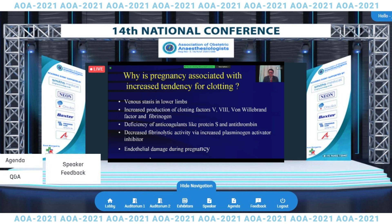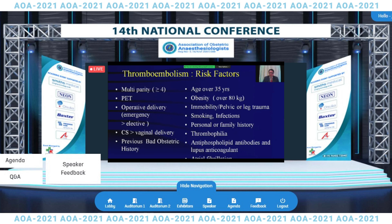Why does pregnancy have an increased tendency for clotting? It is nature's mechanism to enhance clotting at the peripartum period where there is a possibility of bleeding. However, this leads to a hypercoagulable state throughout pregnancy. There is venous stasis in the lower limbs, increased production of clotting factors V, VIII, von Willebrand factor, and fibrinogen. There can be deficiency of anticoagulants like protein S and antithrombin, decreased fibrinolytic activity via increased plasminogen activator inhibitor mechanism, and endothelial damage promoting coagulation.